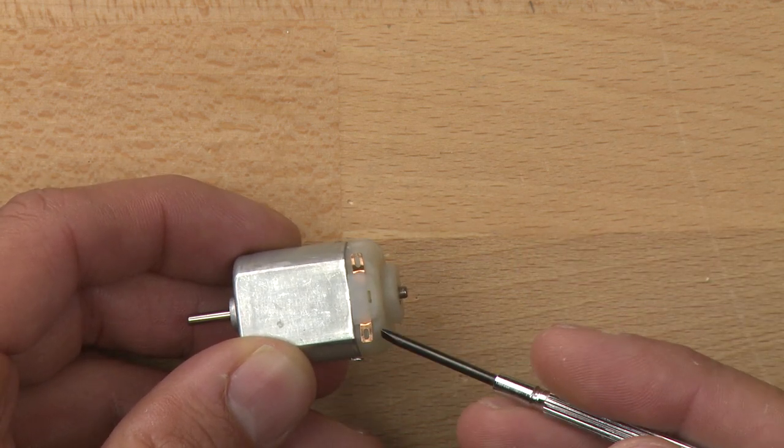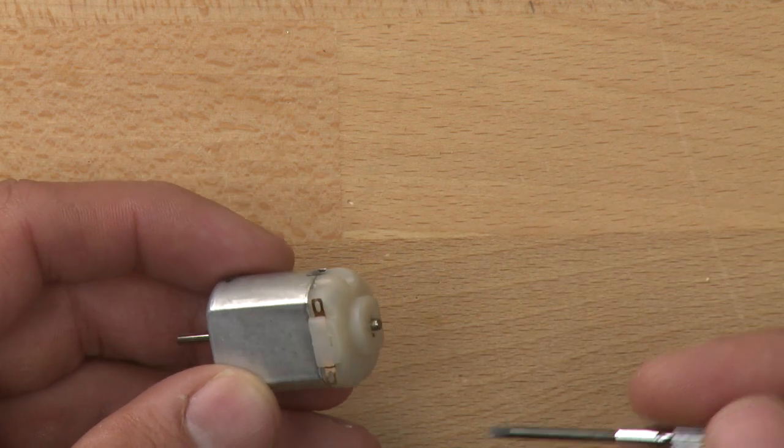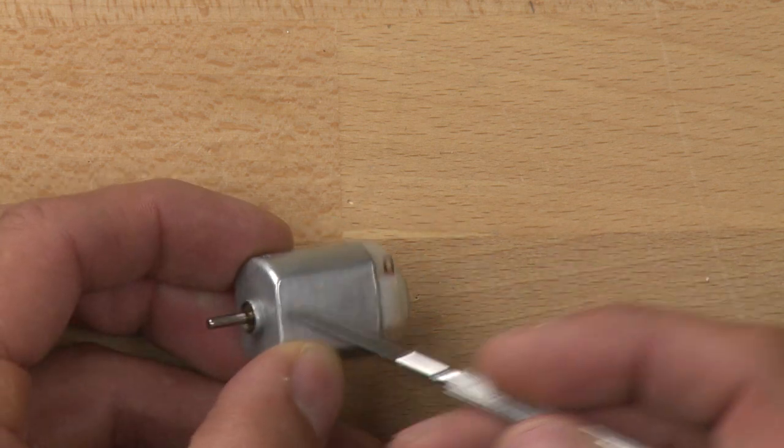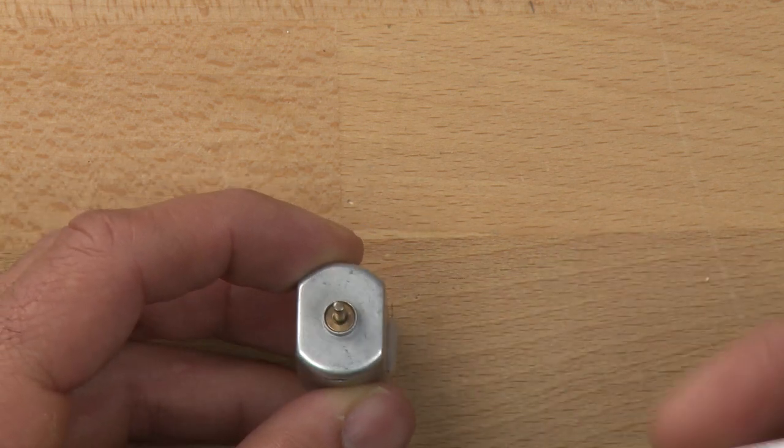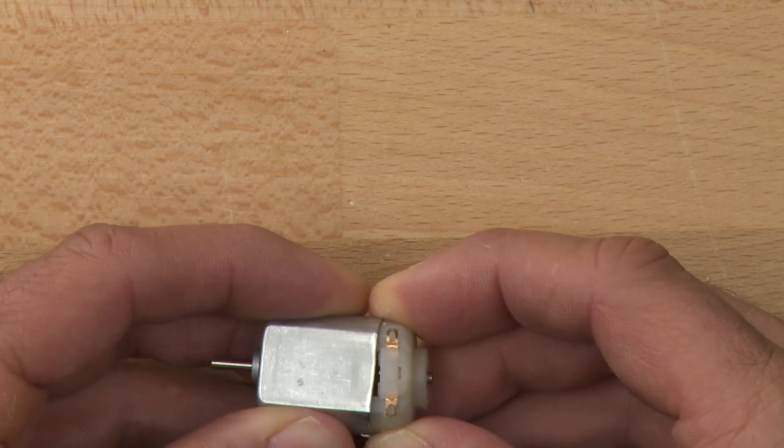The power goes in through one of the contacts and out through the other one depending on the way the power is flowing through the circuit. Then we've got an axle here and this is made out of steel and it's chrome plated. On the end here there is a brass bearing that allows the motor to spin at a good speed.